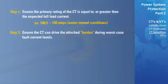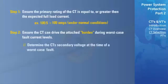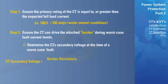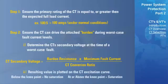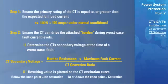To determine whether the CT can drive the attached burden under worst-case fault conditions without saturating, we must determine what the CT's secondary voltage will be at the time of this fault. The CT secondary voltage at the time of fault is equal to the burden resistance times the maximum fault current divided by the CT conversion ratio. The resulting value is then plotted onto the CT excitation curve. If the value plotted on the curve is below the knee point, then the CT will not saturate. If the value is equal to or greater than the knee point, then the CT will saturate.